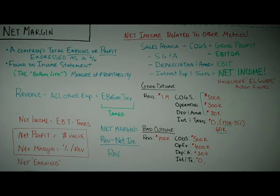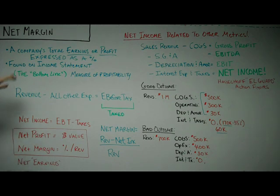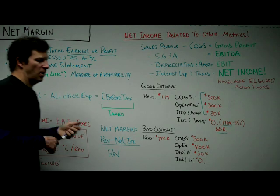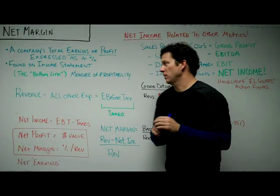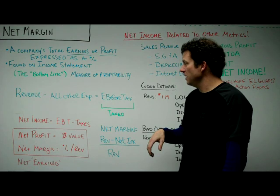Net margin is a company's total earnings or profit expressed as a percentage. The only difference between net margin and net income is that net margin is expressed as a percentage in relation to revenue. You will find this on the income statement. Often people will talk about it as being the bottom line because it appears as the bottom line on an income statement.